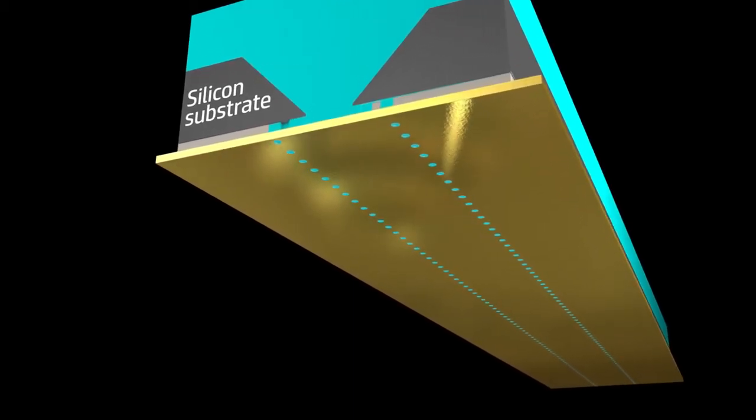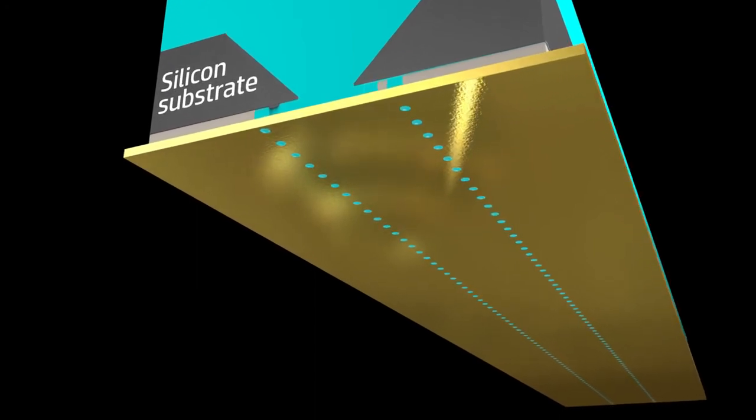The printhead's electronic and fluidic components are built on a silicon substrate, shown in gray.